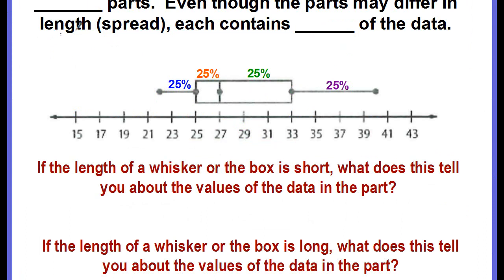Remember that box plots separate the data into four equal parts. Even though the parts may differ in length or their spread, each contains 25% of the data.